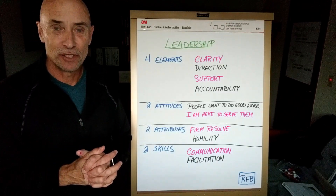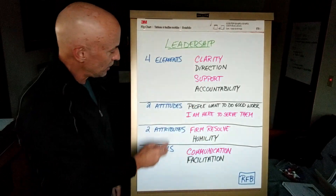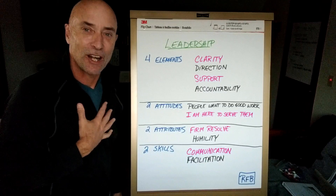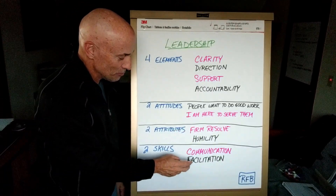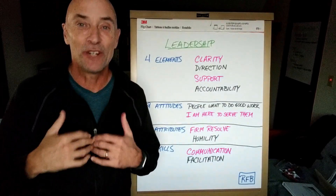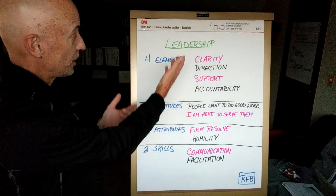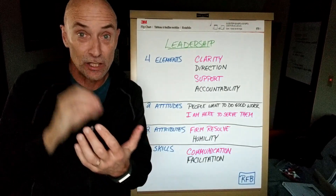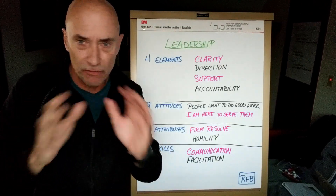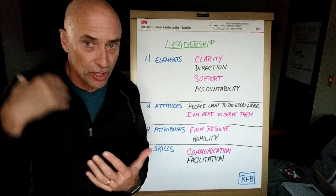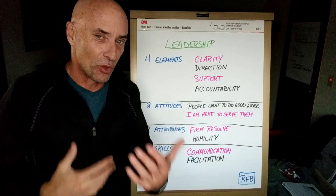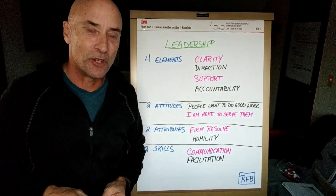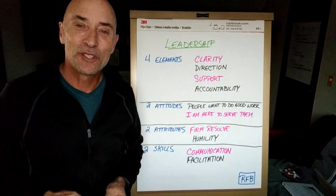In short, that is my simple definition of leadership. It involves four elements, two attitudes — people want to do good work, and I am here to serve them — two character attributes, that is firm resolve and humility, and two skills: communication and facilitation. I'd be very interested in hearing your thoughts, and also what would you add? If it were put to you to state simply, clearly, and quickly what leadership is, what it's about, and what distinguishes good from poor leaders, how would you respond? Do you have it simple enough in your head to work from it and help people grow and develop? Please add your thoughts in the comments below, subscribe if you haven't done so already, and I look forward to talking to you next time.